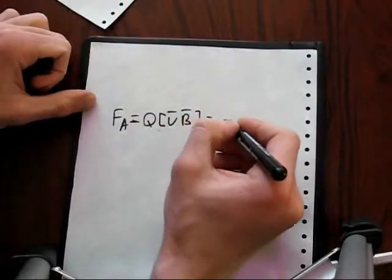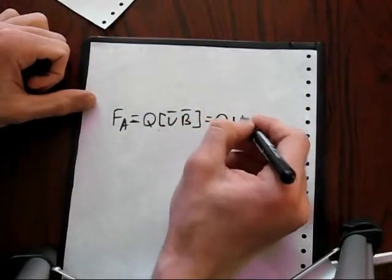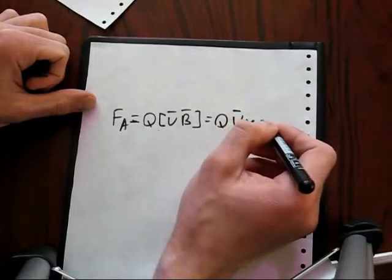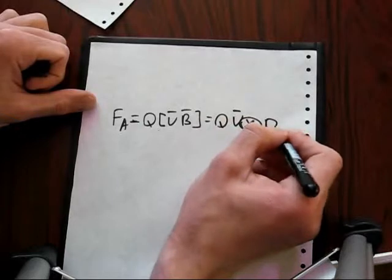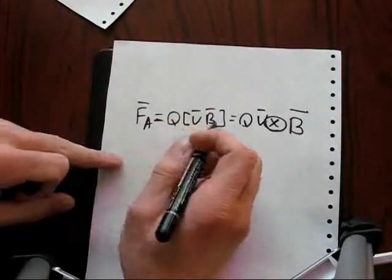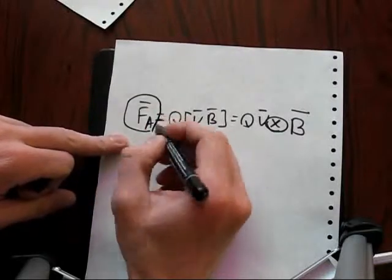Which can be written in the following form with the sign of multiplication B. And I want to define the direction of the vector of Ampere force.